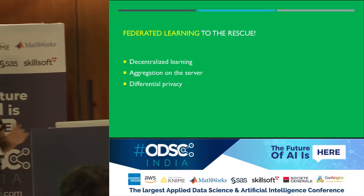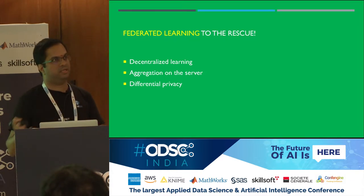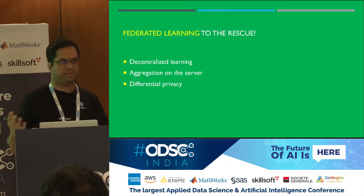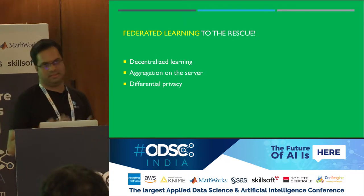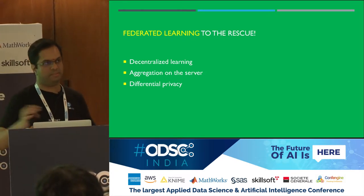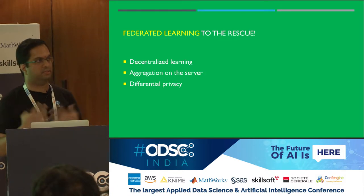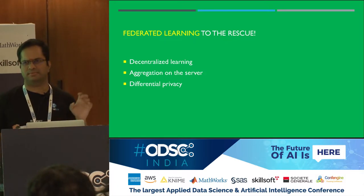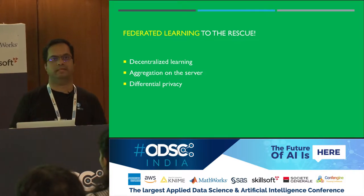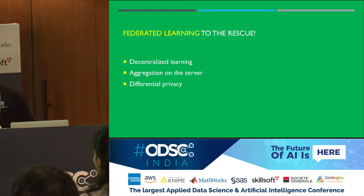Federated learning is just a fancy word for what three tasks accomplish. It is basically decentralized training — you do not train in one centralized cloud system. Once you have decentralized learning, you need to find a way to aggregate the models to come up with better ones. And the third thing is how to maintain privacy when such a system operates. These are the three components that make up federated learning.